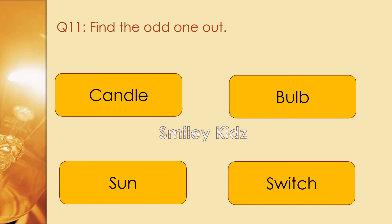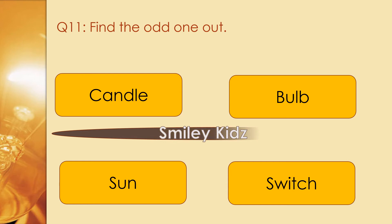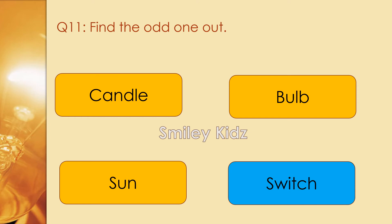Question number 11. Find the odd one out. Options are candle, bulb, sun, and switch. The right answer is switch. Switch is the odd one out because candle, bulb, and sun are luminous objects and switch is a non-luminous object.